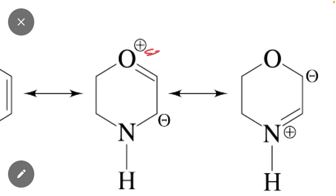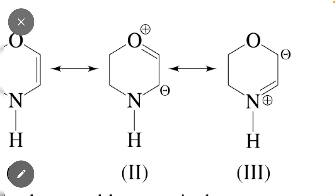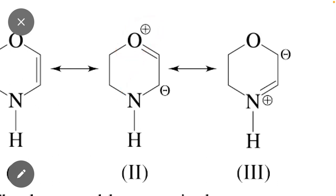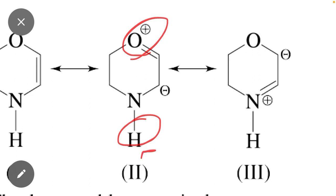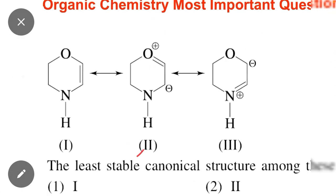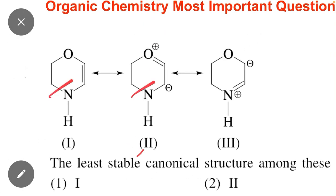If there were a negative charge on oxygen, it would be more stable. But the question asks which is least stable. In structure two, oxygen carries a positive charge, so this structure is least stable. Similarly, if a more electropositive atom carries a negative charge, that structure is also least stable. Therefore, option two — structure two — is the least stable of the three structures.